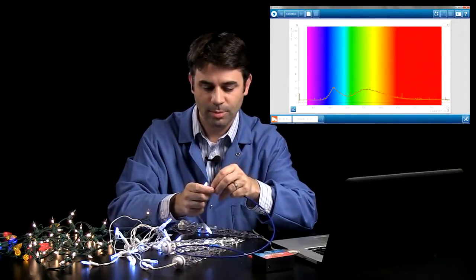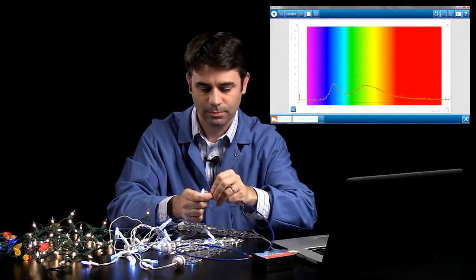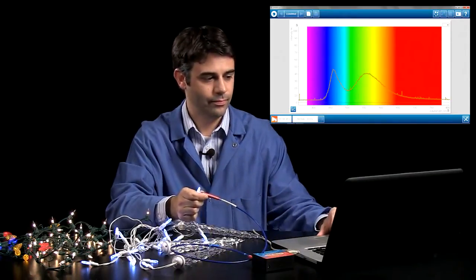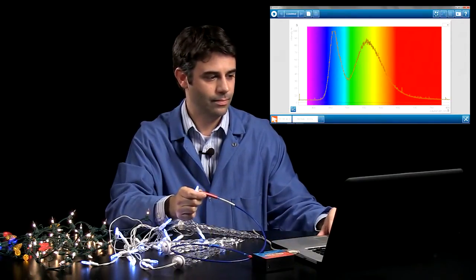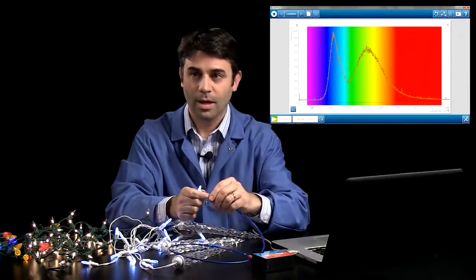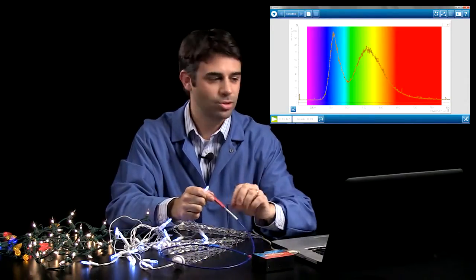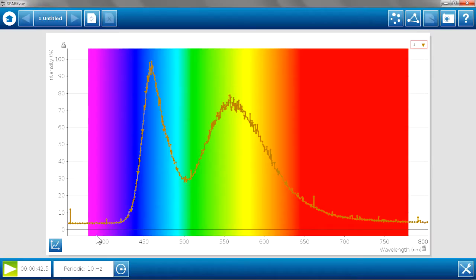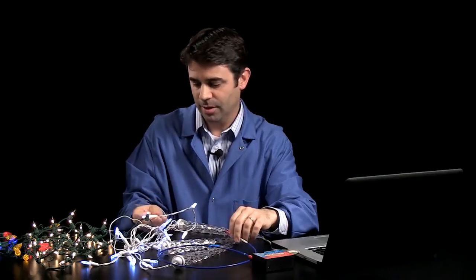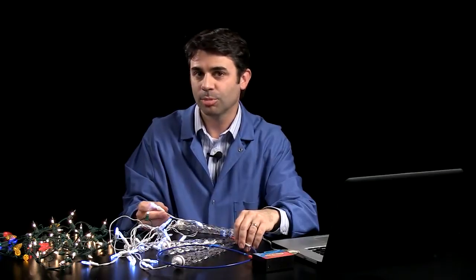We'll use the spectrometer again with the fiber optic cable. And there we go. Not the same broad spectrum. Sort of a peak in the blue area and then another peak in the yellow-green area, giving a different color signature than the incandescent bulb.